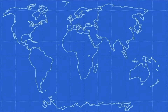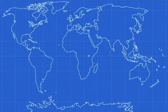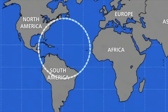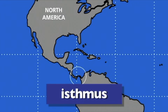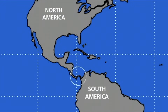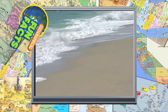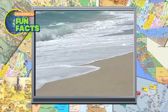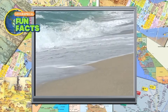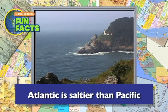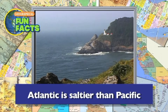Land that connects two larger pieces of land and is surrounded on two sides by water is called an isthmus. This is the isthmus of Panama. Here's another geographical fun fact: between the Atlantic Ocean and the Pacific Ocean, which is saltier? Believe it or not, the Atlantic Ocean is saltier than the Pacific Ocean.